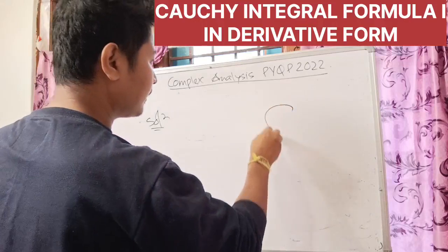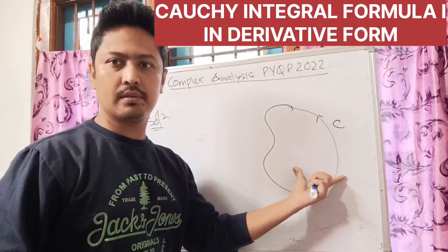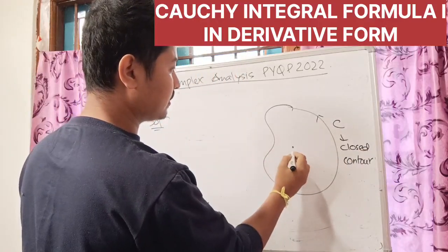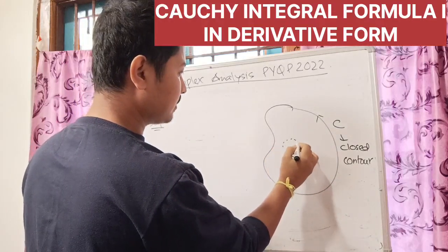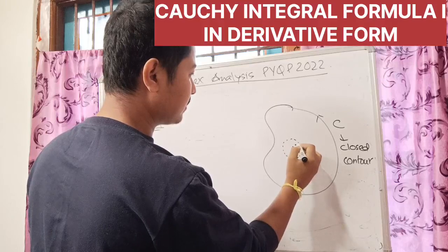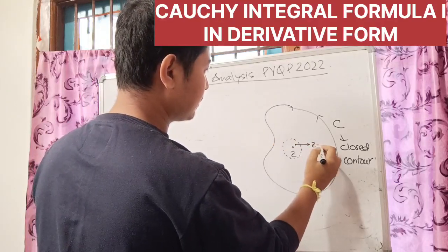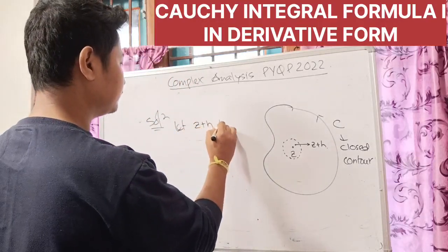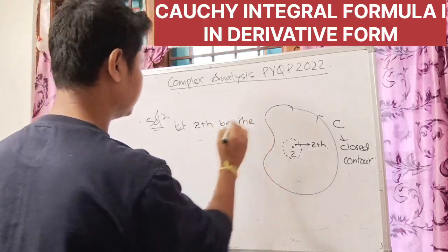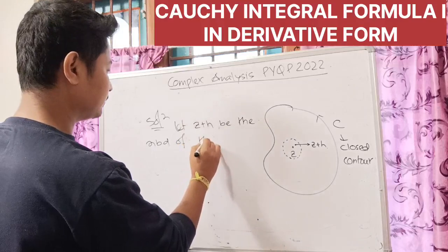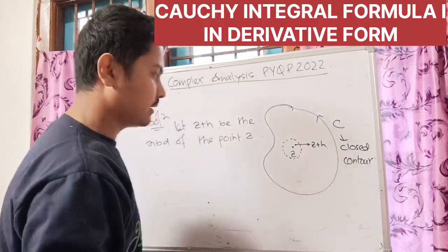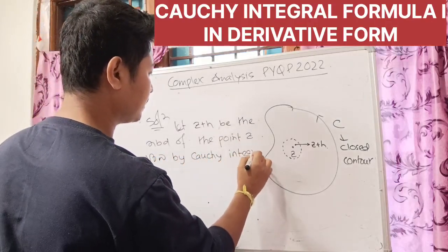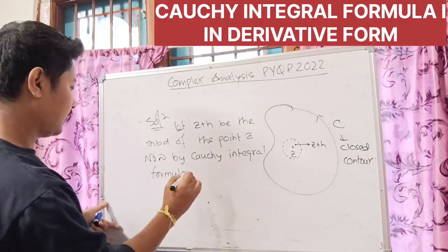So let us consider a closed contour C in the anti-clockwise direction. We take an interior point z. In the neighborhood of z, let z plus h be the neighboring point of z. For this particular point z and z plus h, we will apply the Cauchy integral formula to develop the structure of the proof.